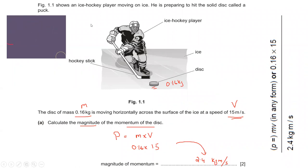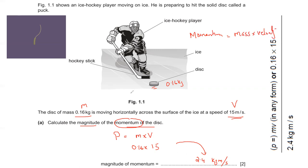To summarize: the magnitude of momentum is the product of mass and velocity. The mass is 0.16 kg and the velocity is 15 m/s, so 0.16 times 15 equals 2.4 kilogram meters per second.